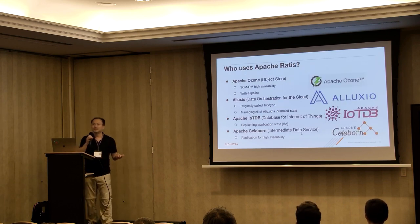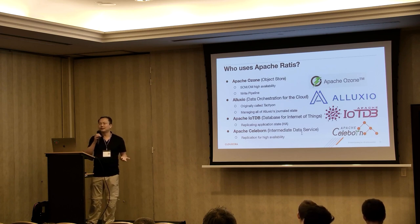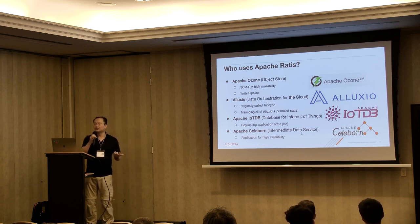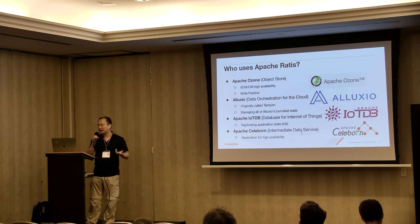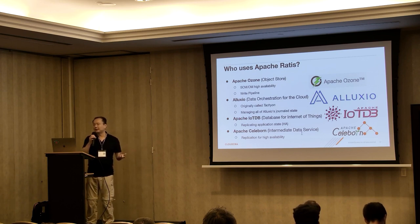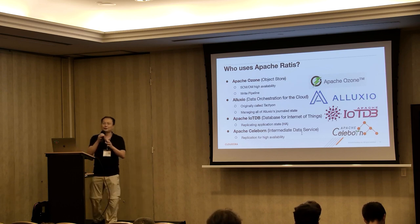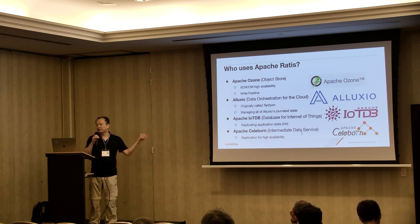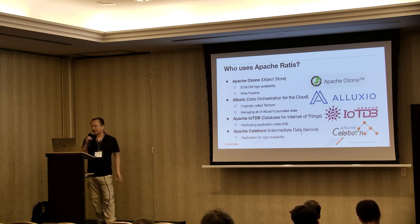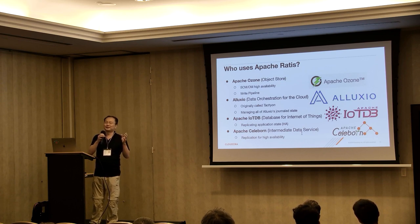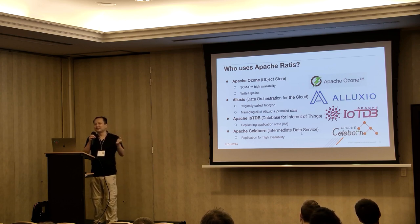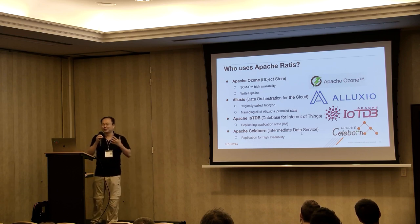So who uses Apache Ratis? Of course, Apache Ozone uses Ratis because we built Ratis for Ozone. Ozone uses it for high availability — Ozone Manager and Storage Container Manager both use Ratis for HA. Ozone also uses Ratis for the write pipeline to replicate data. When you have a good library, other projects start using it too. We have Alluxio, Apache IoT DB, and Apache Celeborn using Ratis. And when those projects need features, they contribute back — especially around multi-DB, they contributed a lot to Ratis.